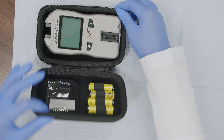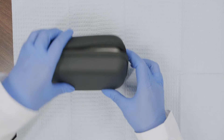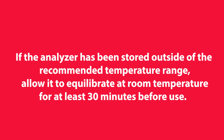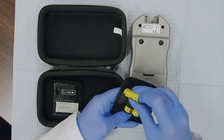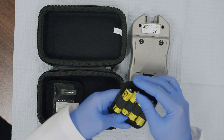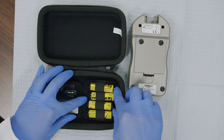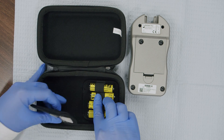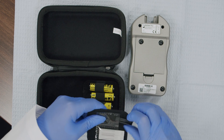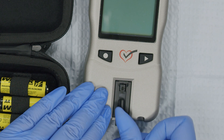Proper storage and handling helps protect the performance and longevity of your analyzer. Store the CardioCheck Plus analyzer in the case provided at the temperature indicated in the user guide. If the analyzer has been stored outside of the recommended temperature range, allow it to equilibrate at room temperature for at least 30 minutes before use. If you plan to store the analyzer for an extended period of time, remove the batteries and store them in the analyzer's case. Place the black optical glass cover on the analyzer before storing.